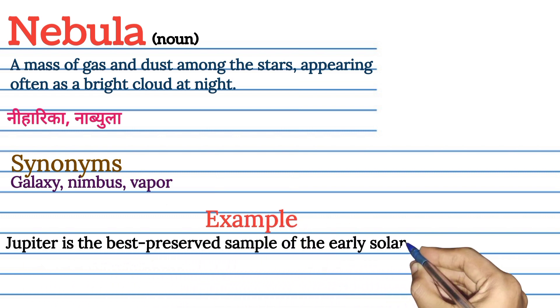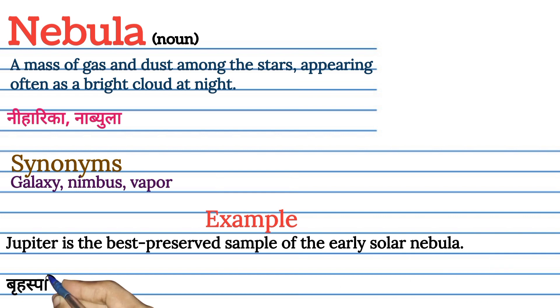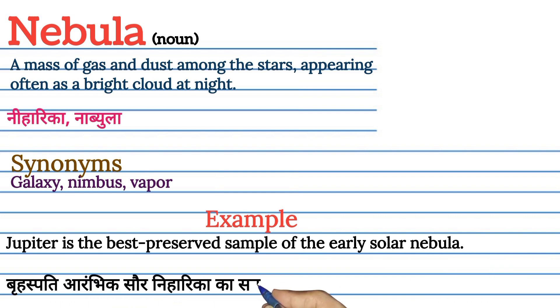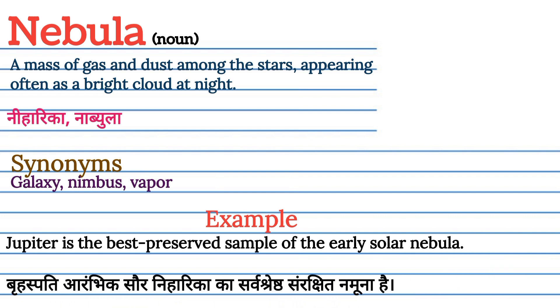Jupiter is the best preserved sample of the early solar nebula. Brahaspati, Arambiks, or Niharika ka sarvashresht sanrakshit namuna hai.